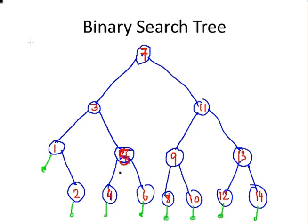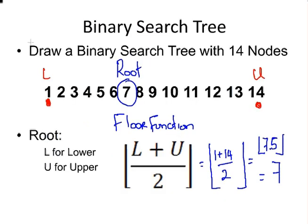Again, the important thing there is that L plus U over 2. Where L is the lower node and U means the upper node of the search tree. Of that sub-tree, even. That ends our presentation. Thank you.